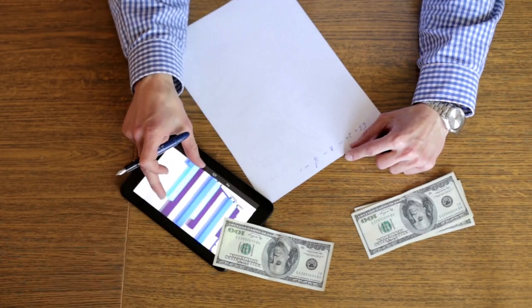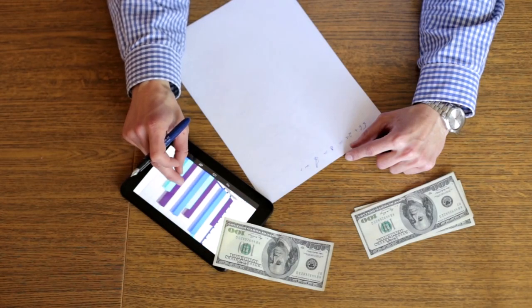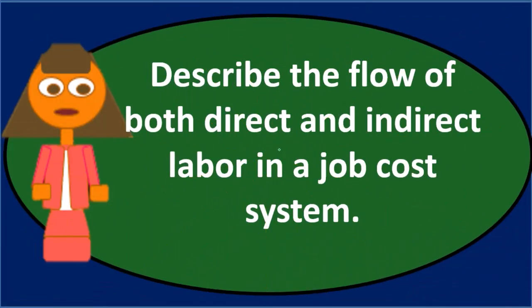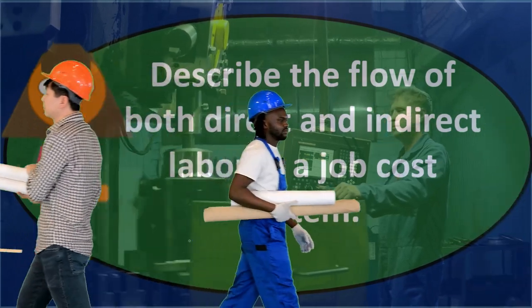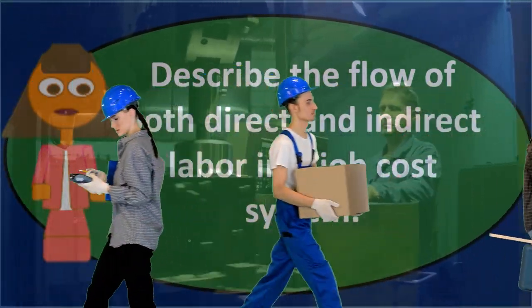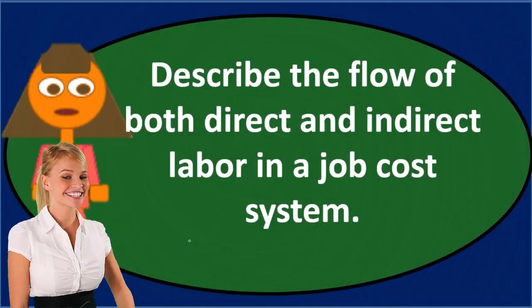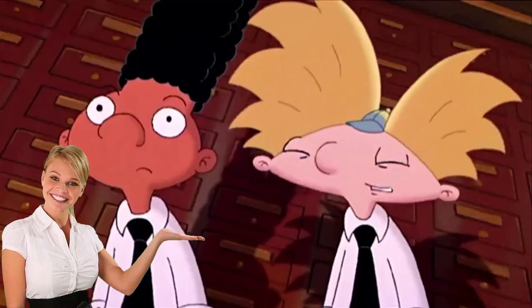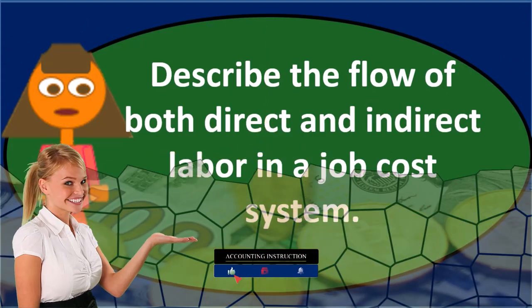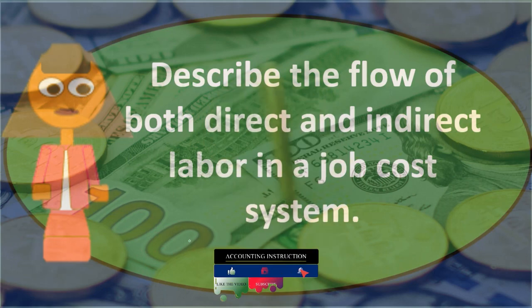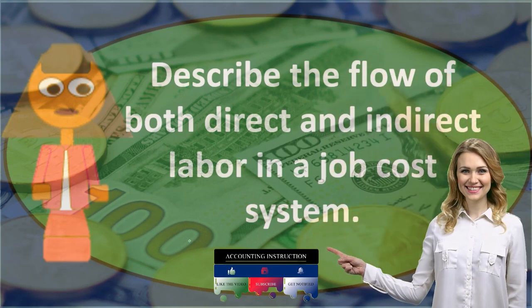The difference between direct and indirect labor: direct labor can be applied directly to a specific job. These are typically hourly workers whose payroll can be tracked to a particular job. The journal entry debits work in process — increasing that inventory account — rather than wages expense, as the work is done on that specific job.